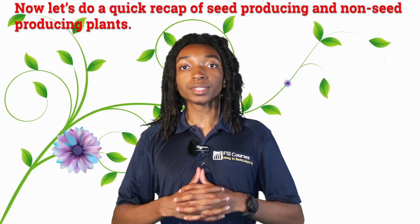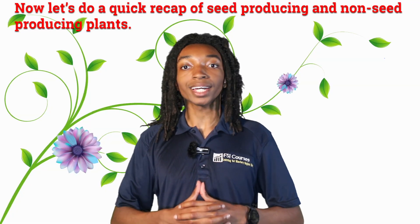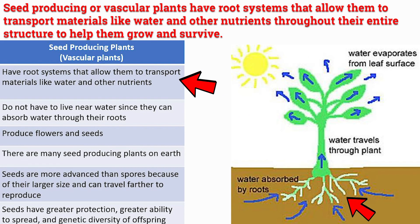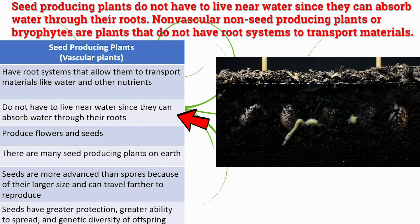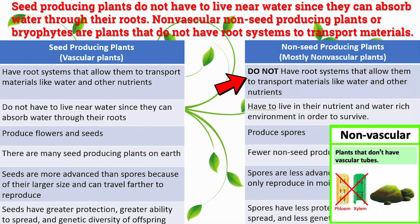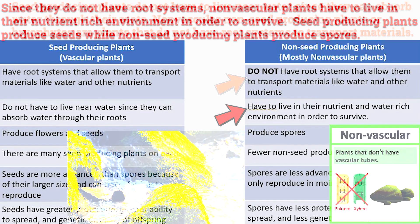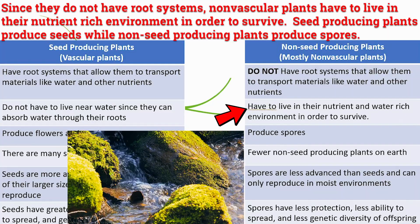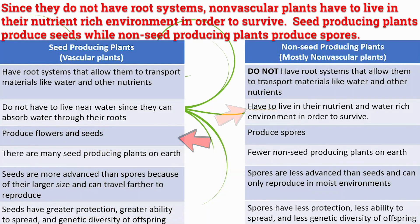Now let's do a quick recap. Seed-producing, or vascular, plants have root systems that allow them to transport materials like water and other nutrients throughout their entire structure to help them grow and survive. Seed-producing plants do not have to live near water since they can absorb water through their roots. Non-vascular, non-seed-producing plants, or bryophytes, do not have root systems to transport materials, so they have to live in a nutrient-rich environment to survive.